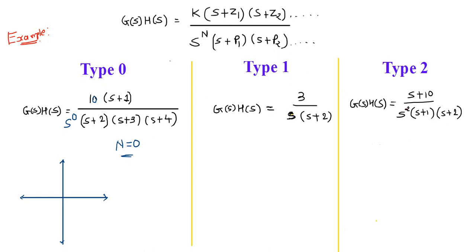Now for the type 1 system. The loop transfer function G(S)H(S) equals 3 divided by S(S+2). Here the power of S is 1. By comparing S^1 with S^N, we can say that N equals 1, meaning the number of poles at the origin is 1.